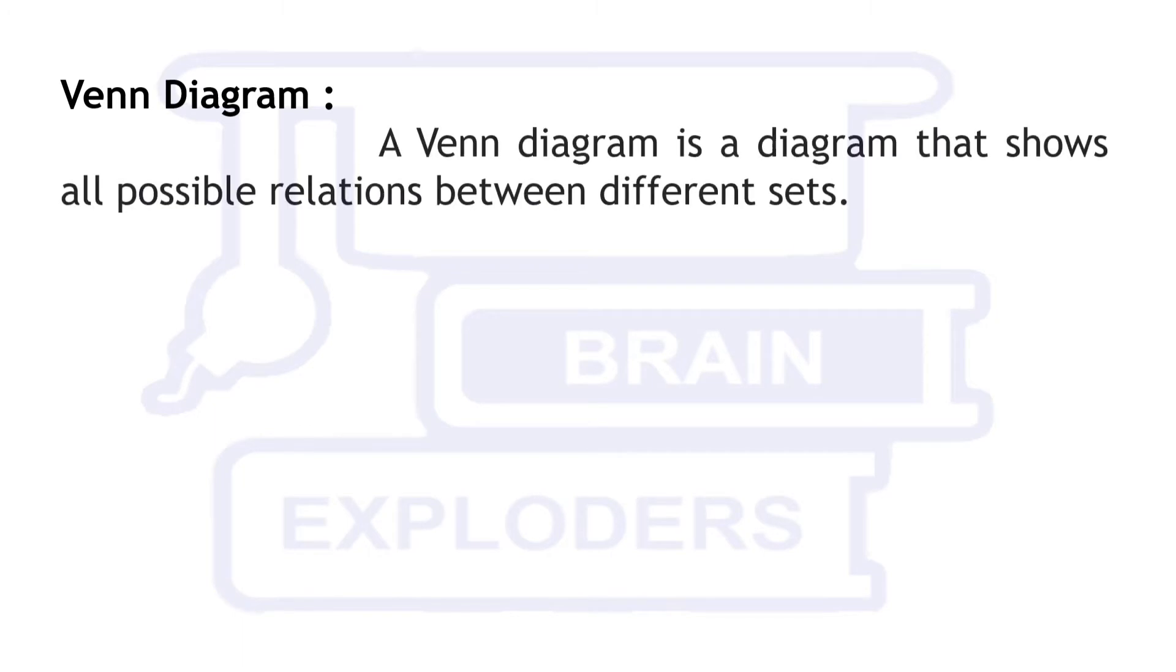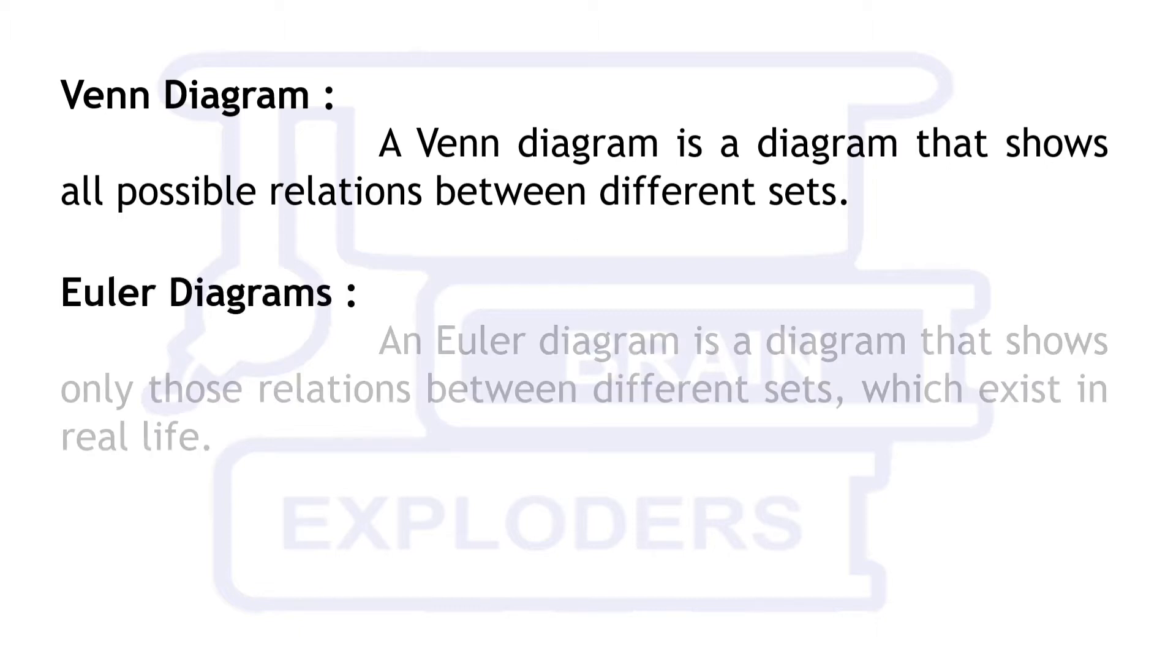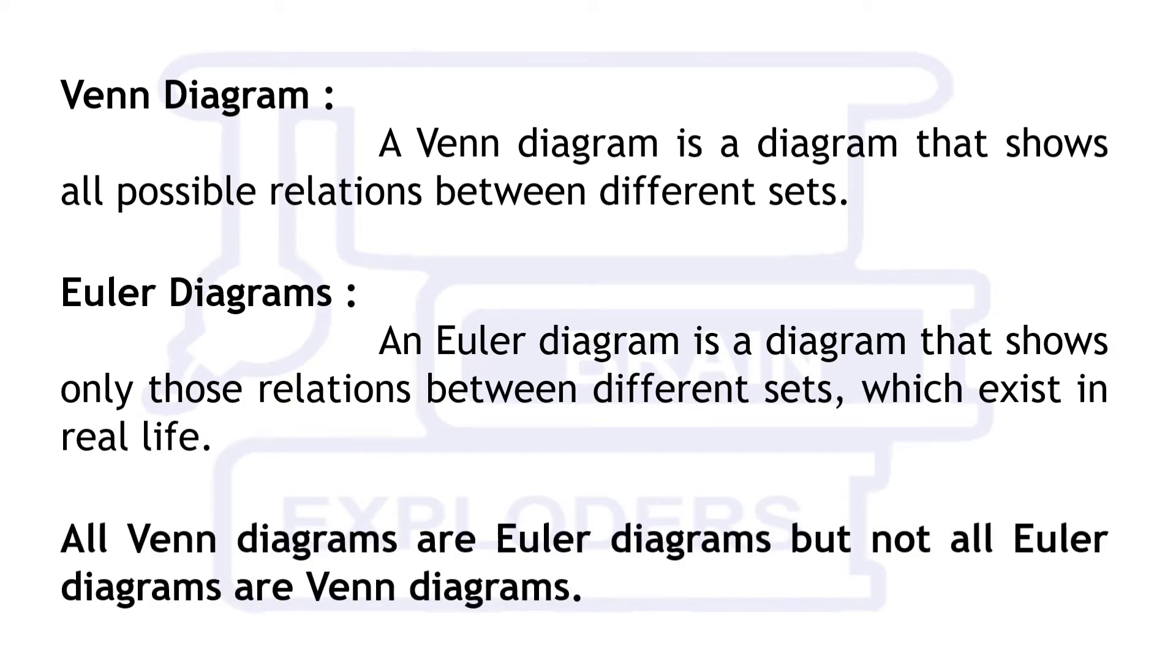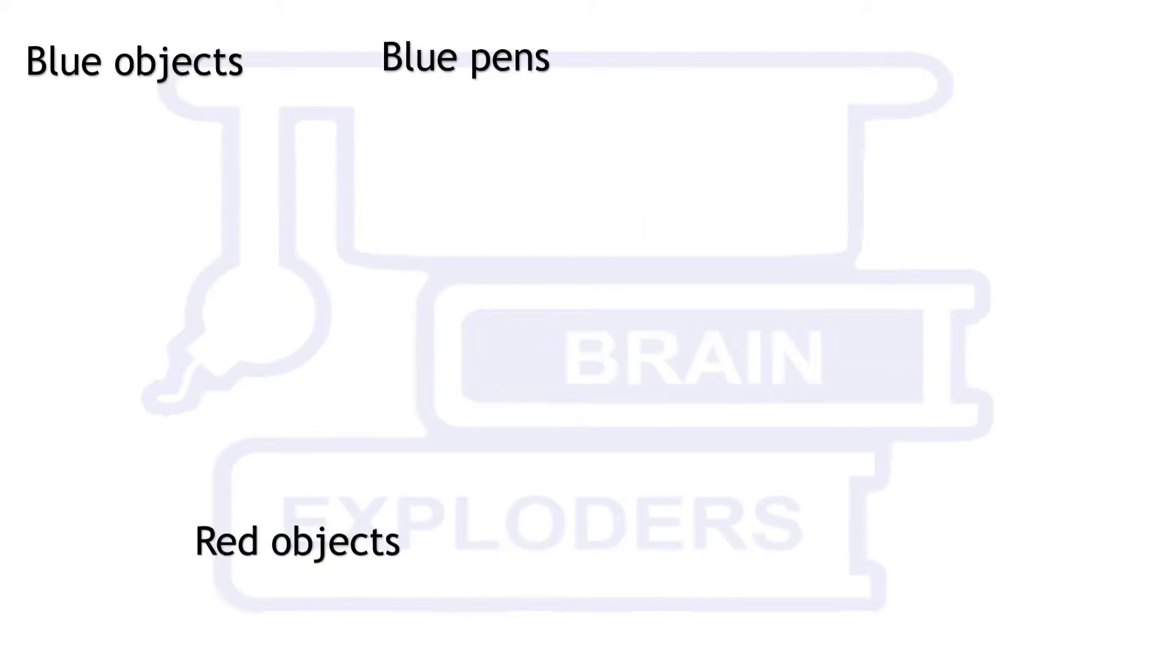Let us start with the definitions. A Venn diagram is a diagram that shows all possible relations between different sets, whereas an Euler diagram is a diagram that shows only those relations between different sets which exist in real life. Hence, all Venn diagrams are Euler diagrams, but not all Euler diagrams are Venn diagrams.